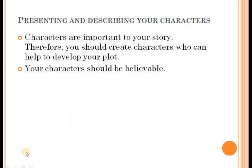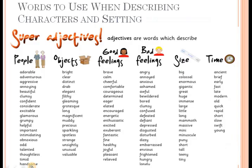What are some of the words we can use? We look at some super adjectives when we talk about people, objects, feelings, size, and time. Those things can be used to add to setting, and words for people can describe how the person is feeling or the type of person they are.